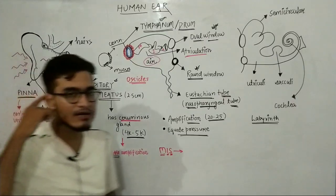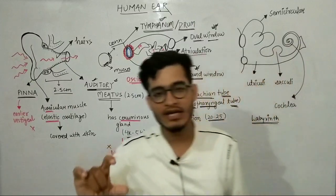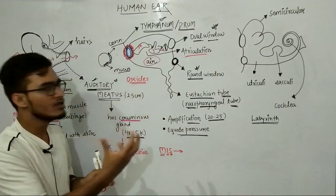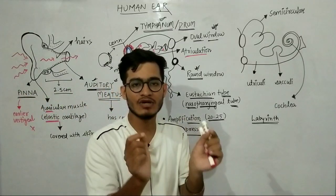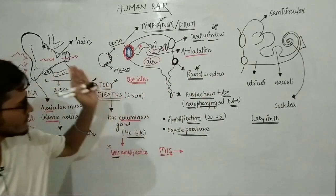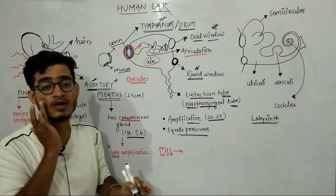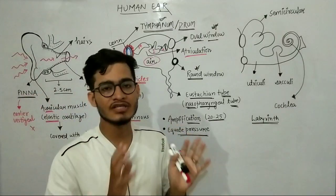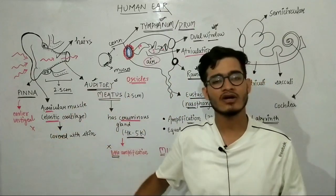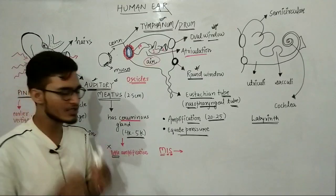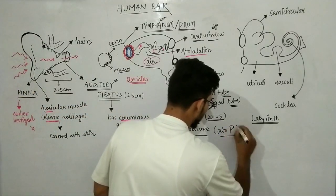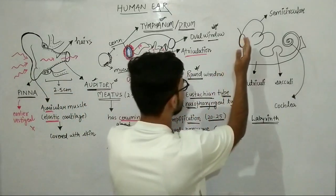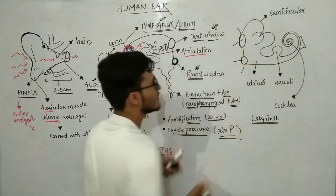So we have covered: external ear — pinna, auricular muscle, auditory canal with ceruminous glands and hairs, then the tympanum (outer surface surrounded by connective tissue, inner side by mucous membrane), then ossicles — malleus, incus, stapes — with the remaining space being air-filled. Below that is the eustachian tube connecting to the pharynx, functioning to equate air pressure between the external and middle ear. There are two windows: the oval window and the round window. These are also present in the internal ear diagram, connecting the two diagrams.